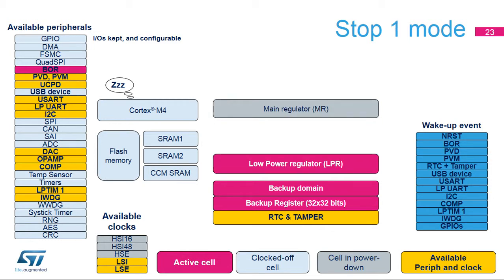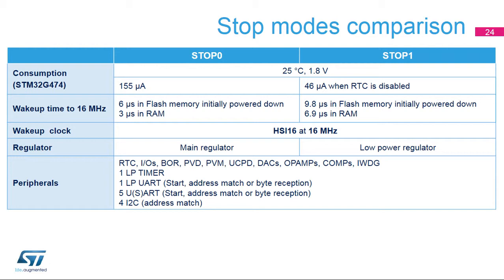Stop 1 mode is very similar to stop 0, except that the power figures are much lower as the main regulator is stopped and replaced by the low-power regulator. Flash memory, as well as HSI-16, are configurable and can be stopped or kept enabled. When comparing stop modes, stop 0 mode consumption is higher than stop 1 mode consumption, but the wake-up time is shorter. Stop 0 mode keeps the main regulator enabled, enabling a very short wake-up time of 3 microseconds when restarting from the RAM, at the expense of a higher consumption than stop 1.